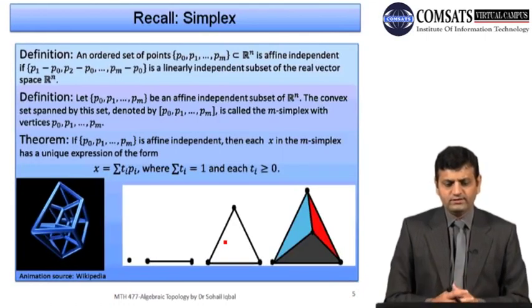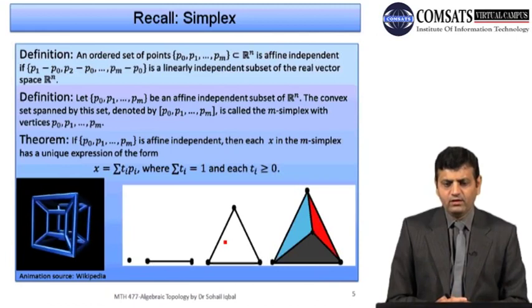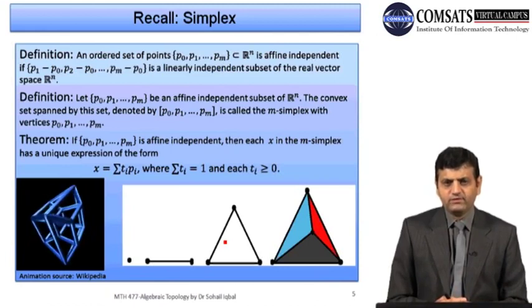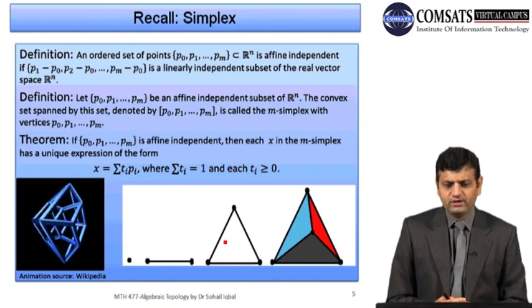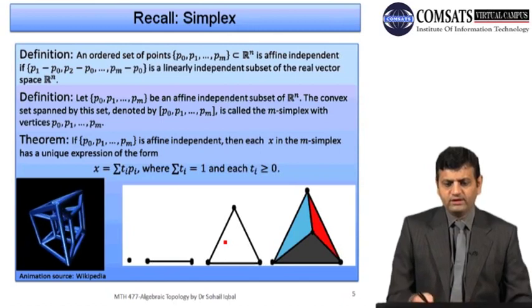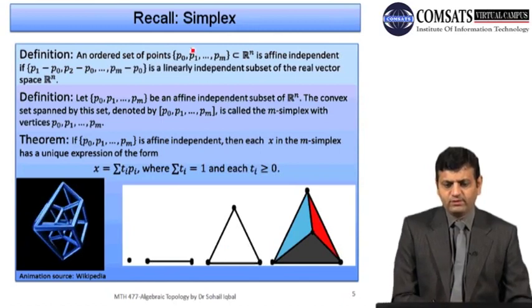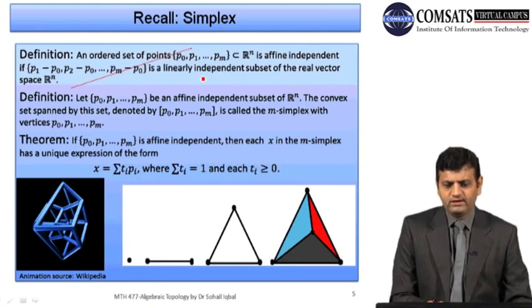To construct a simplex we need affinely independent points. A set of m+1 points is affinely independent if p_1 − p_0, p_2 − p_0, …, p_m − p_0 is a linearly independent subset of the real vector space ℝ^n.